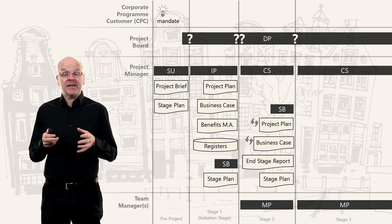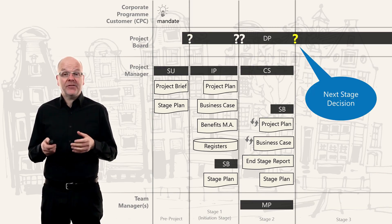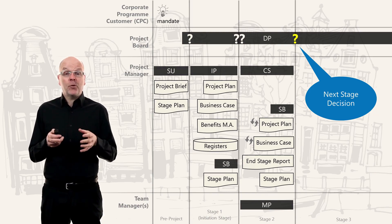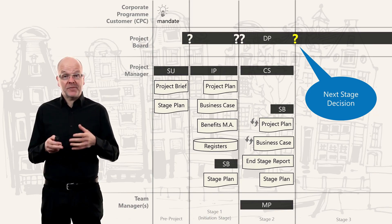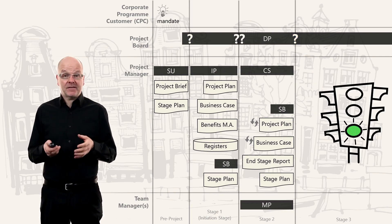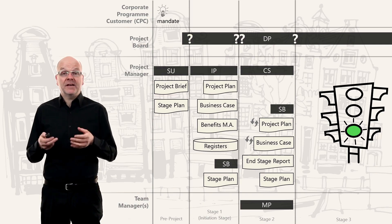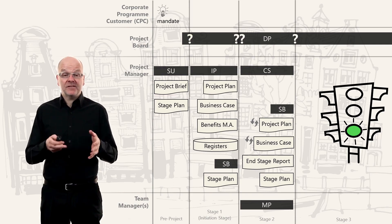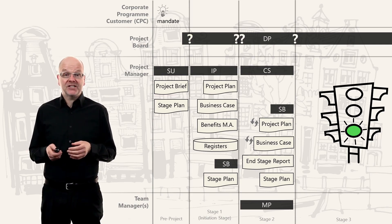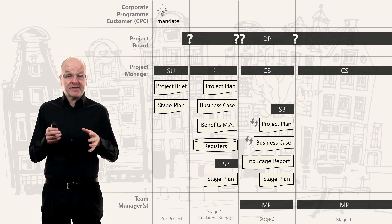We have just finished stage two and we are asking the project board to allow us to continue on to the next stage, so they have to make their next decision. The project board reviewed the documents from the stage boundary process and said yes — this decision is called 'Authorize a Stage.'